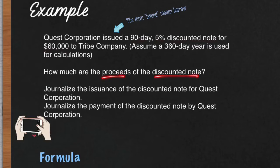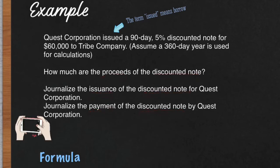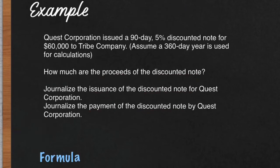Issued means borrowed. In this problem, we'll calculate the proceeds — or how much cash we get when we borrow it — and we'll do the journal entries for the issuance and the payment back for the note.